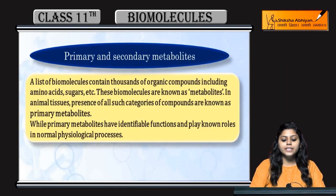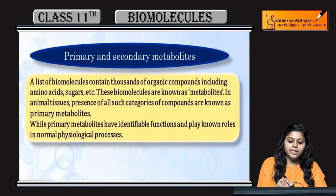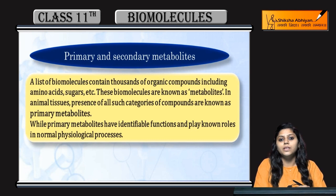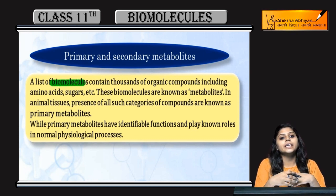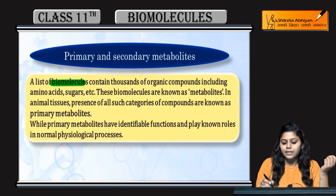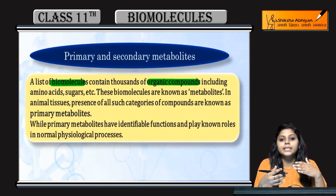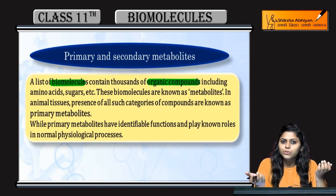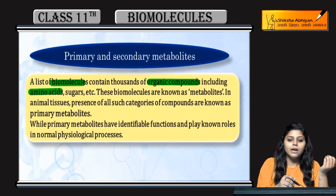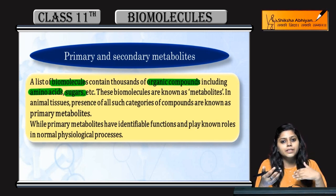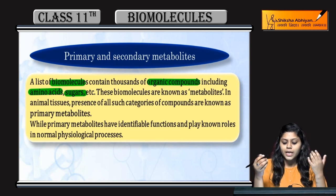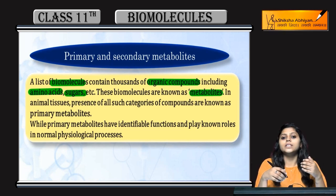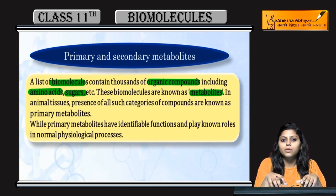Next topic is Primary and Secondary Metabolites. Biomolecules contain thousands of organic compounds — which are organic compounds? They might be amino acids, sugars, lipids, or different proteins. In these biomolecules, we call metabolites.